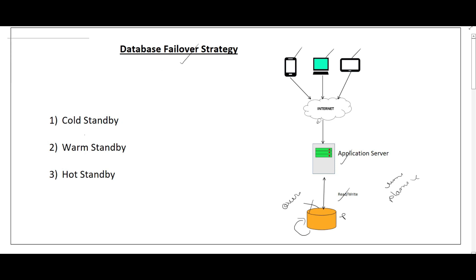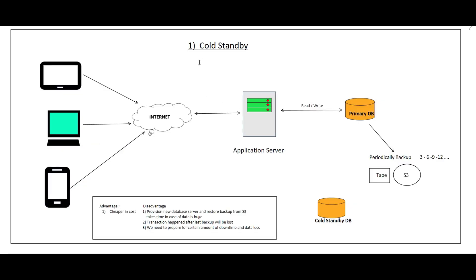We have three different strategies: cold standby, warm standby, and hot standby. In the cold standby strategy, traffic comes from many sources through the internet to the application server, and from the application server to the primary database. This single primary database serves all read/write requests for all users over the internet.